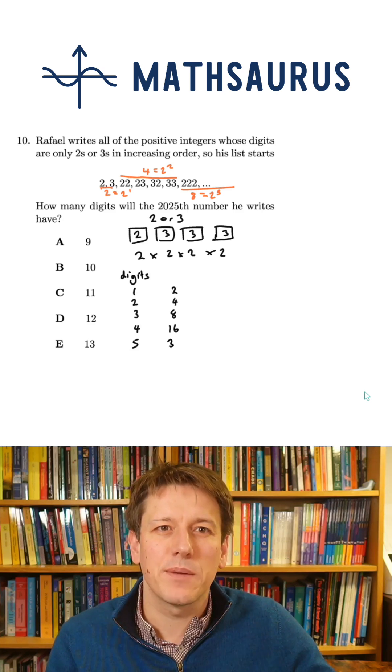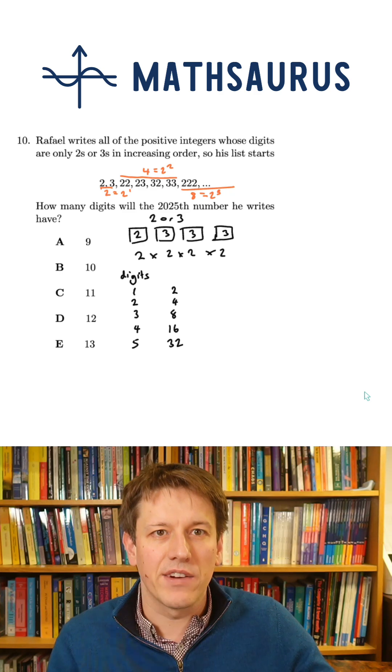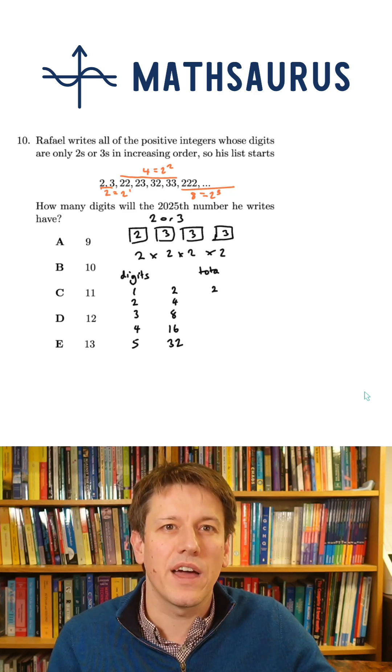So let's see where 2025 is going to end up in this. We've got 1, 2, 3, 4, and five-digit numbers, and there are this many of them: 2, 4, 8, 16, and 32. We'll just start there.